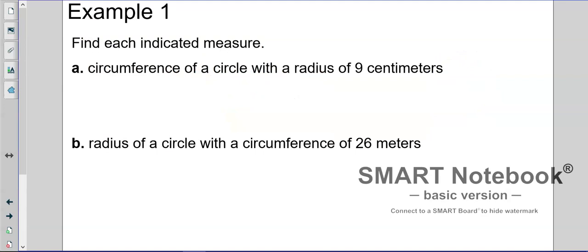So for each indicated measure, find each indicated measure - circumference of a circle with a radius of 9. So if you got a circle, radius of 9 means this, or you can think of it as having a diameter of 18. So circumference is 2 times pi times r, which is 9, or 18 pi.